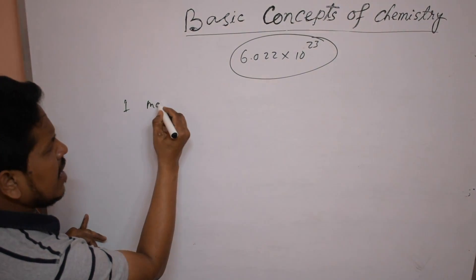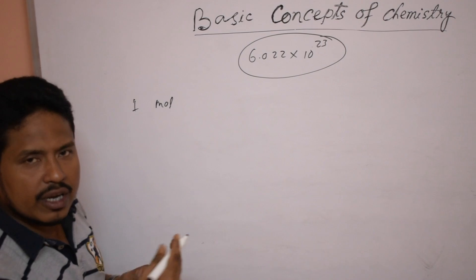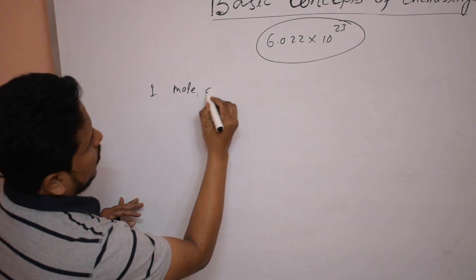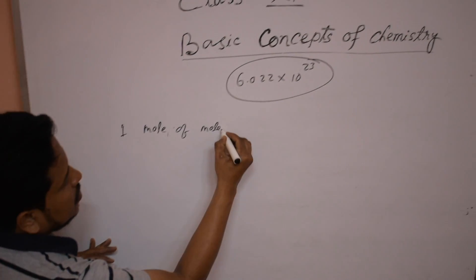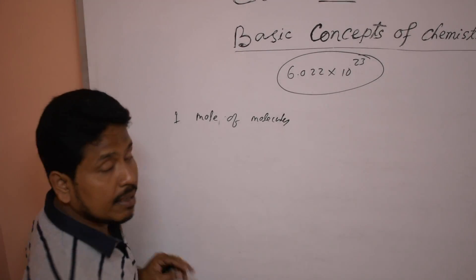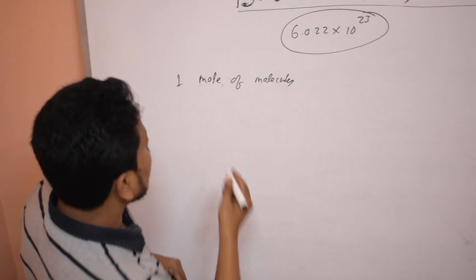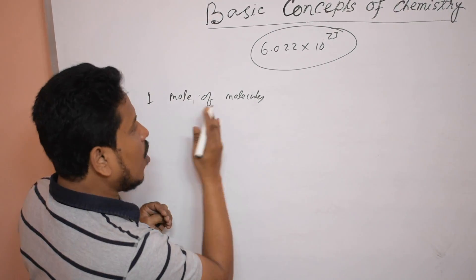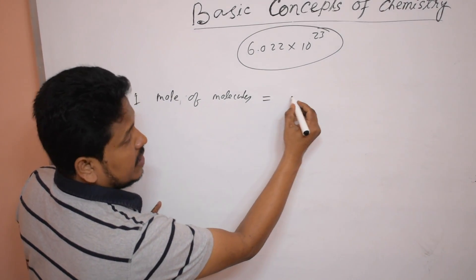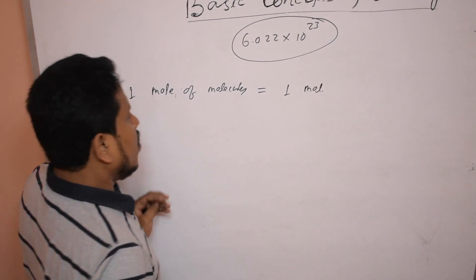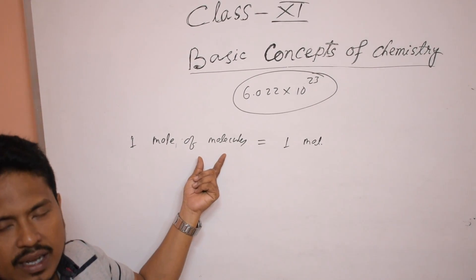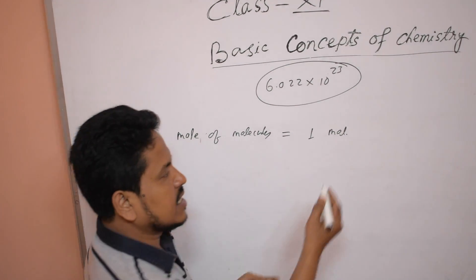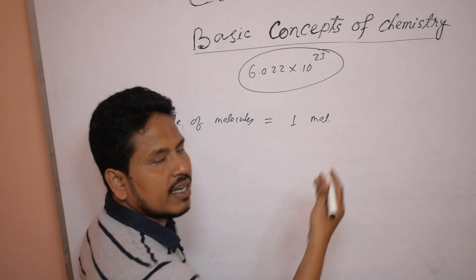Any molecule — it may be elementary or it may be compound — one mole of molecules. You know a molecule is the stable particle that exists in nature, present in all kinds of matter in this universe. So one mole of molecules is briefly known as one mole, because molecule is the stable particle that exists in nature.